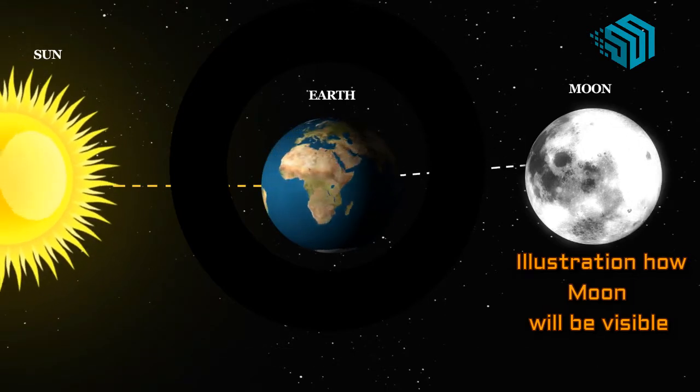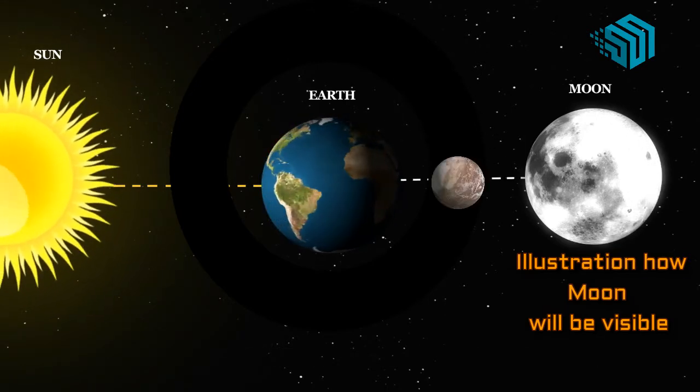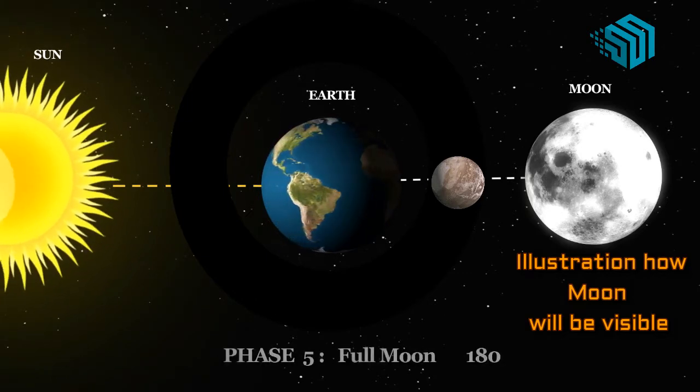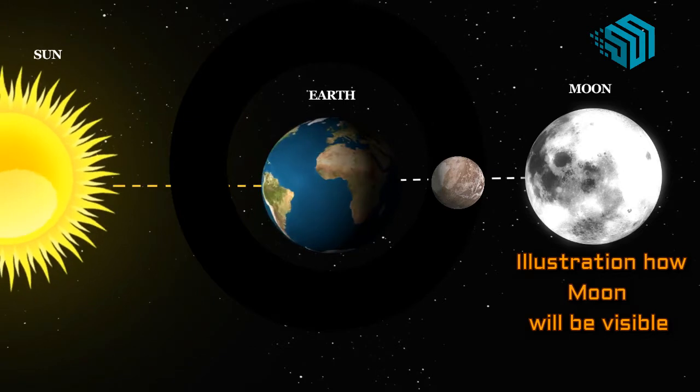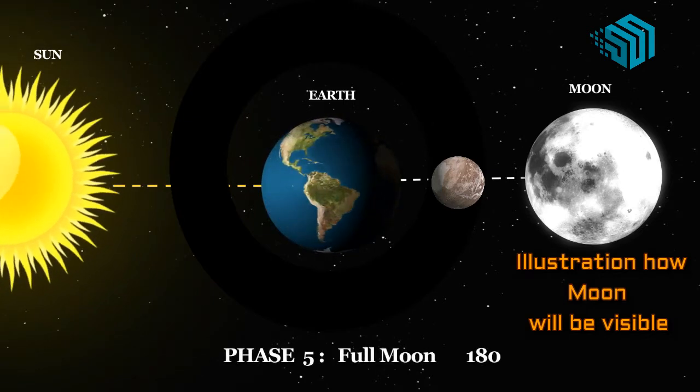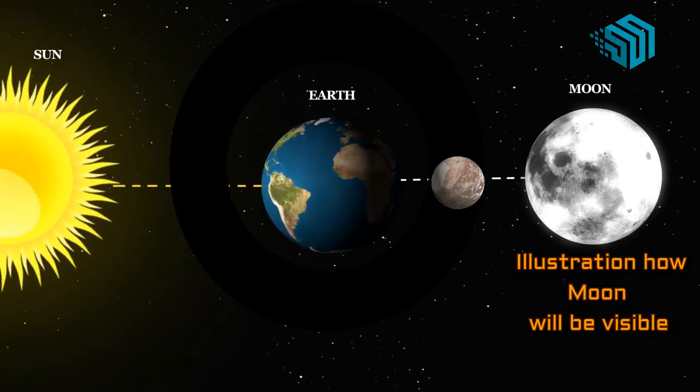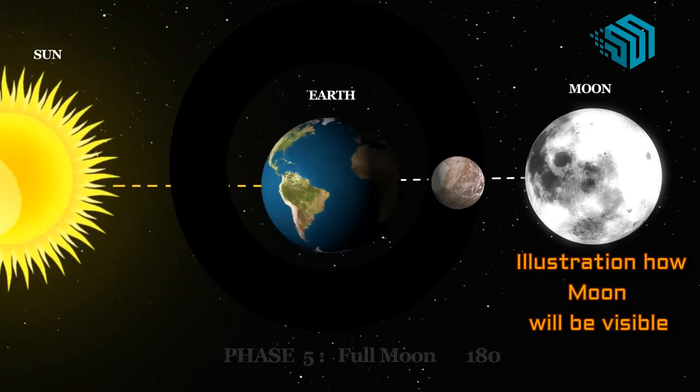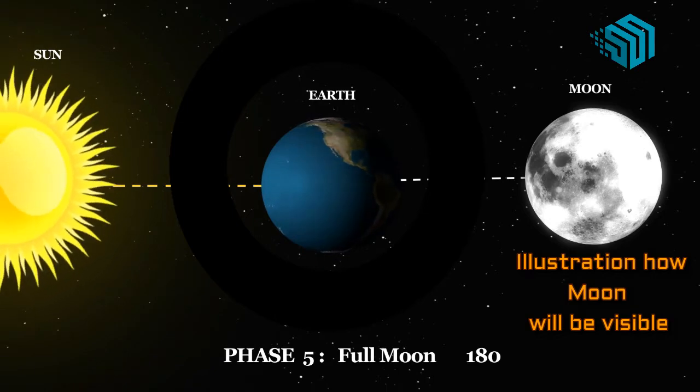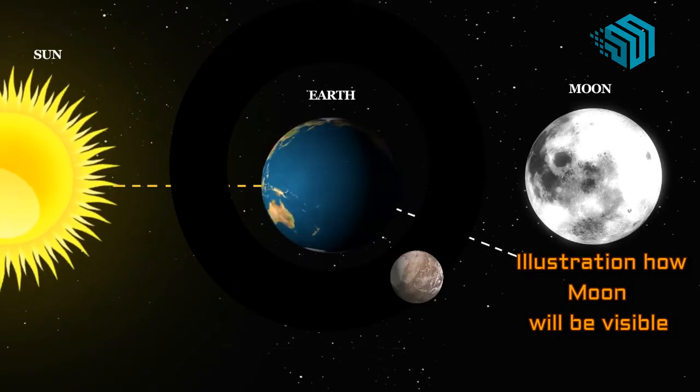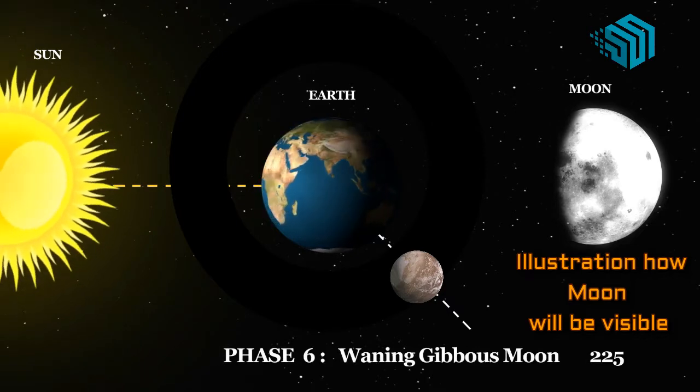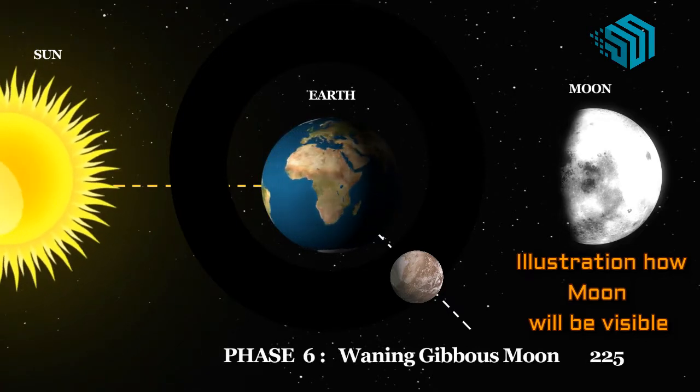Phase five, full moon. On fifteenth day the side of the moon that is lit up by the sun is facing the earth. The entire moon is lit up at this point because the earth comes between the sun and the moon. We call this phase as Poornima.